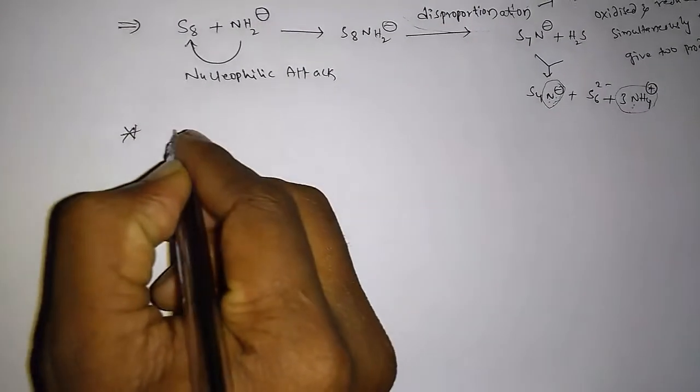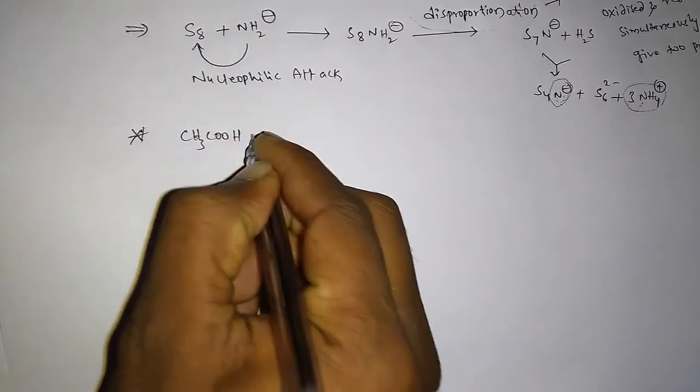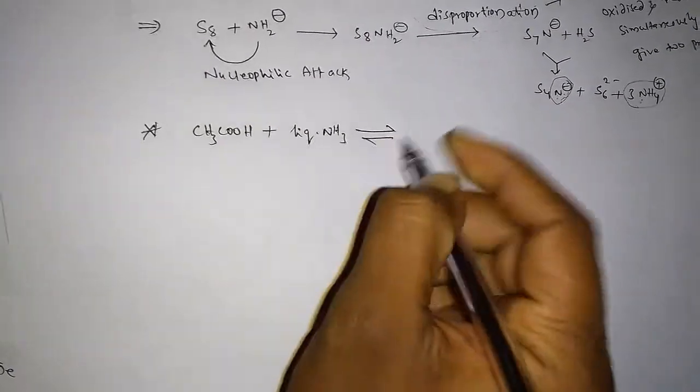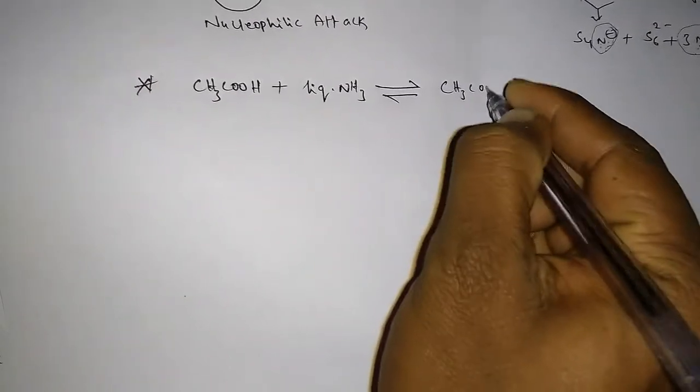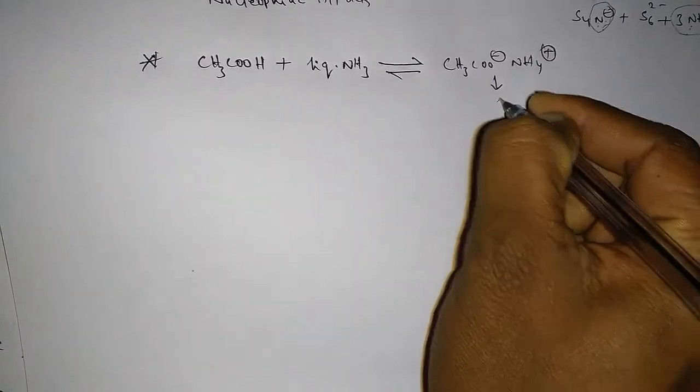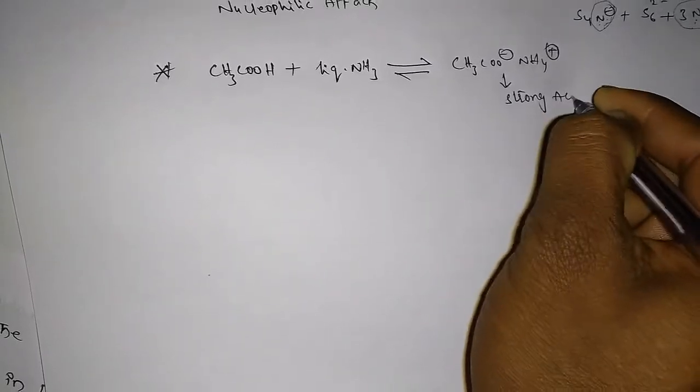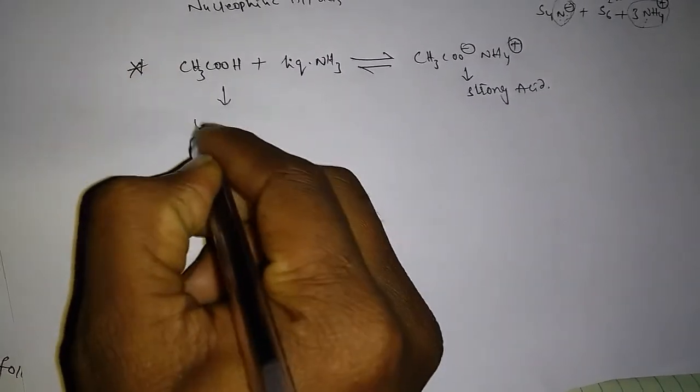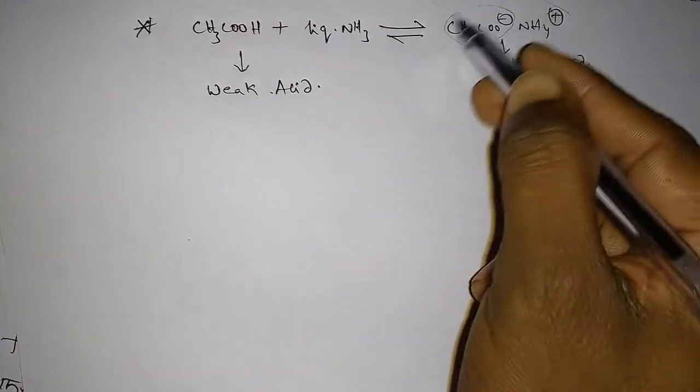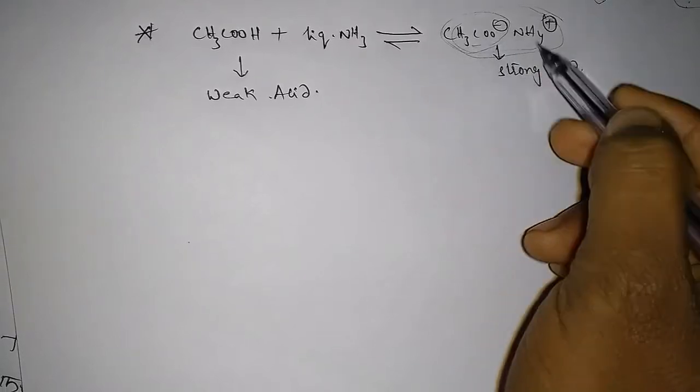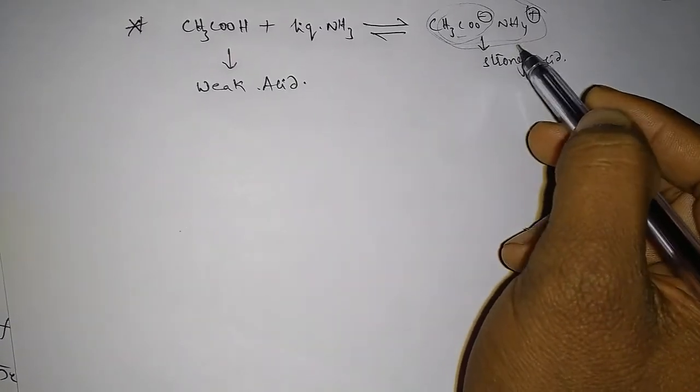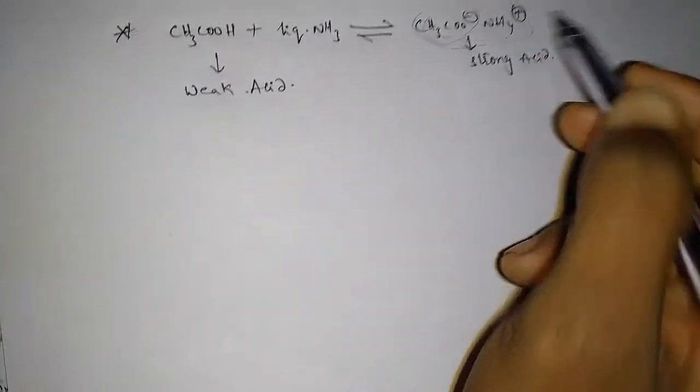And if you observe for acetic acid, CH3COOH, when reacts with liquid ammonia, it forms CH3COO-NH4+. So this acts as strong acid when we compare with acetic acid. This is weak acid. So CH3COO- in this complex has more affinity towards H+ ions, so this acts as strong acid.